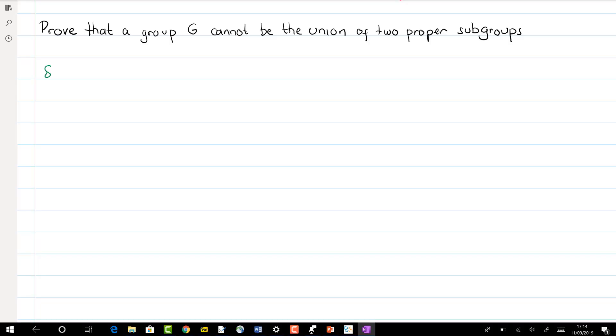Okay, in this video we're going to show that any group G cannot be a union of two proper subgroups. So say on the contrary that G is equal to the union of A and B, where both A and B are subgroups, proper subgroups of G.